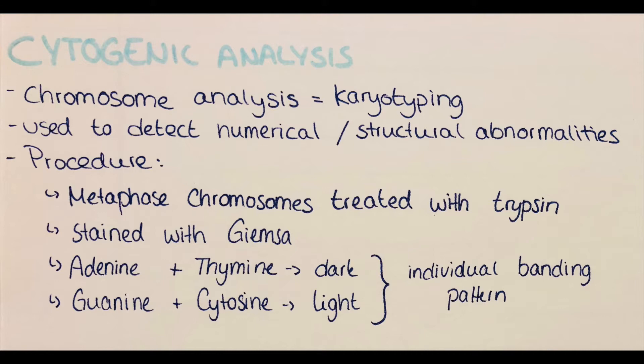After that Giemsa staining, adenine and thymine rich areas are considered as gene poor heterochromatic areas which will be colored more darkly under a microscope. Less densely packed genetic material rich in guanine and cytosine will appear lighter. That leads to the appearance of differently colored bands which leads to a unique pattern for each chromosome number. By the help of a numbering system of these bands, the different chromosomes can be identified clearly.